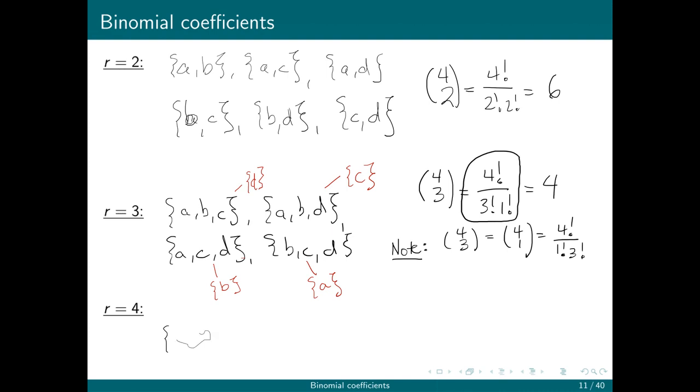And then there's only one 4-element subset. Of course, when I take all the elements, I'm leaving behind nothing. So there's exactly as many 4-element subsets as there are empty subsets.